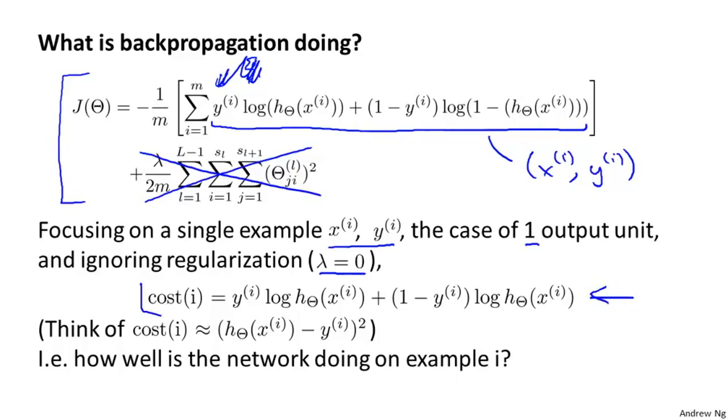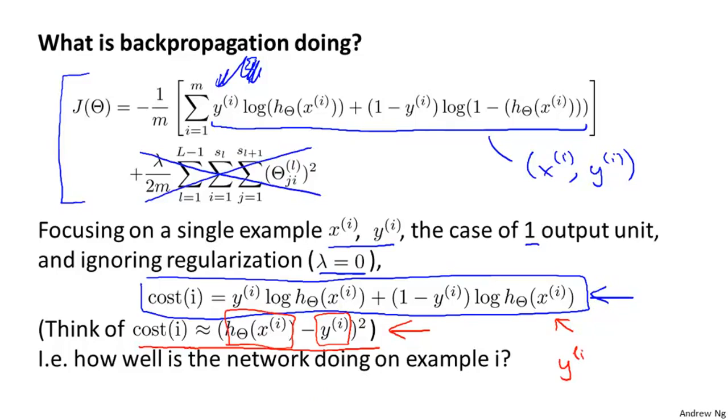The cost of training example i is written as follows. And what this cost function does is it plays a role similar to the squared error. So rather than looking at this complicated expression, if you want, you can think of cost of i being approximately the square difference between what the neural network output is versus what is the actual value. Just as in logistic regression, we actually prefer to use the slightly more complicated cost function using the log. But for the purpose of intuition, feel free to think of the cost function as being this sort of squared error cost function. And so this cost of i measures how well is the network doing on correctly predicting example i. How close is the output to the actual observed label, yi.